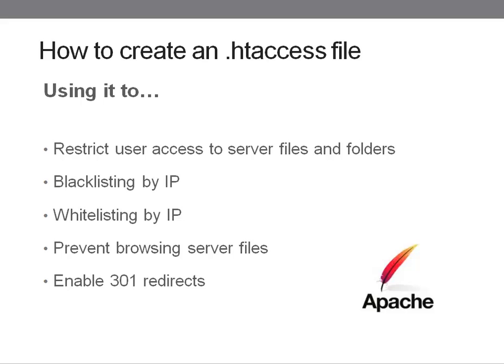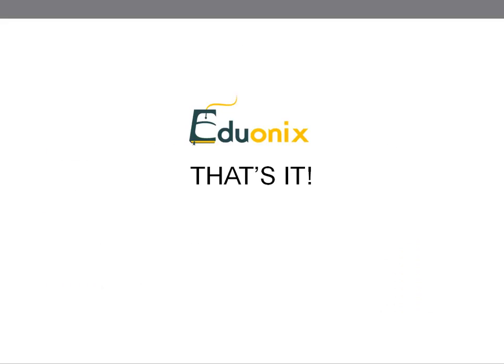We could make it so only certain IP addresses could access the admin area of WordPress. Finally, we looked at preventing people from browsing server files in their browser, and we also enabled some 301 redirects. That's the summary of what we learned in Part A — I hope you learned a lot and look forward to moving on to Part B.